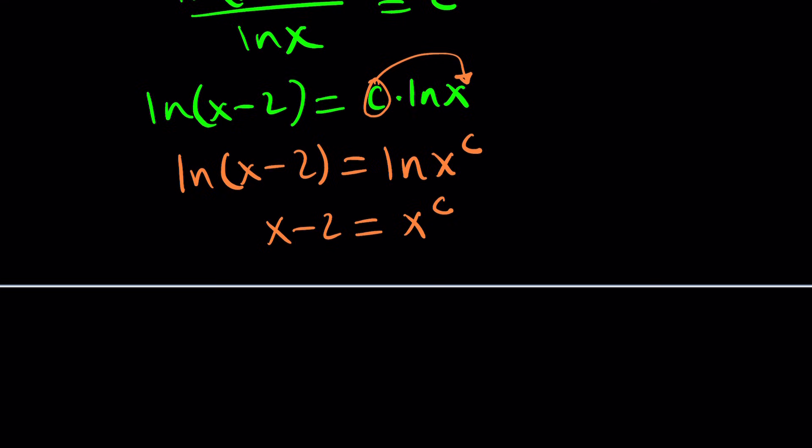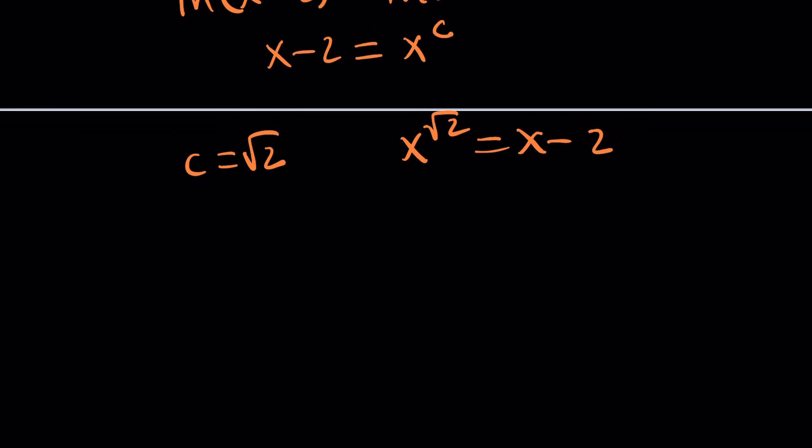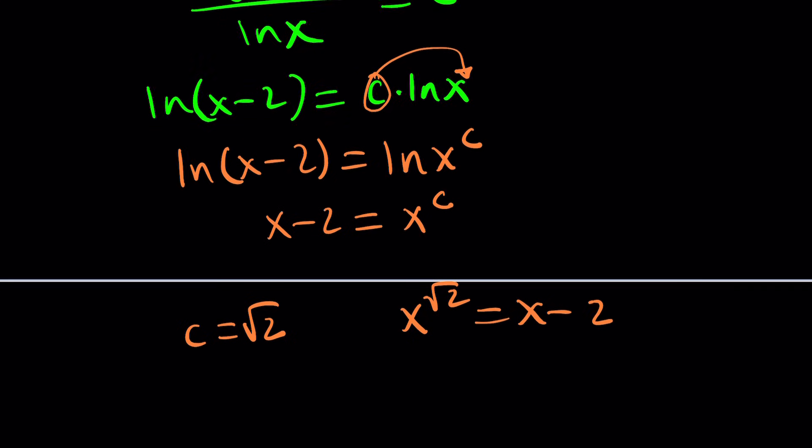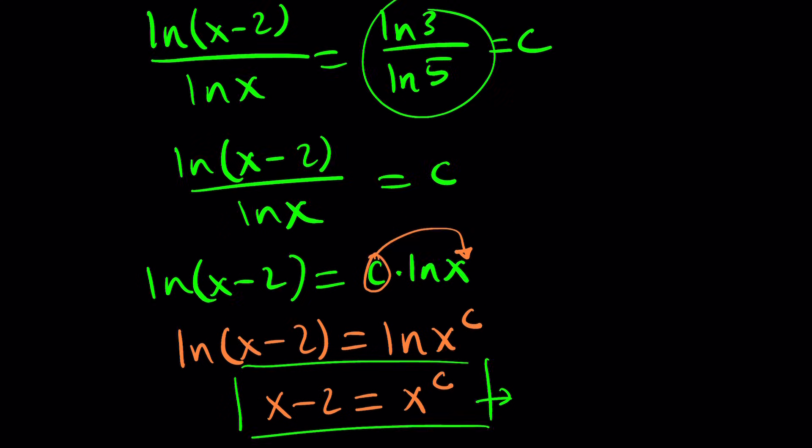You can try cross-multiplication: ln(x-2) equals c times ln(x). Using properties of logarithms, you can make this a power, so this becomes ln(x-2) equals ln(x^c). Because the bases are the same, x minus 2 is supposed to be x to the power c. The problem is, how are you going to solve this equation? If c is 2, it's quadratic; if c is 3, it's cubic. For every value of c, you get a different equation.